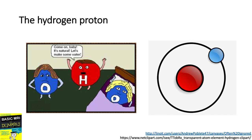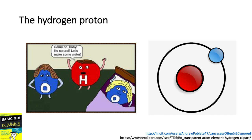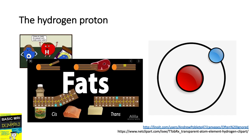In MRI, we use the term protons to represent the hydrogen nuclei. Hydrogen is used because it's abundant in the body. There is one hydrogen atom per molecule of water, and many hydrogen atoms per molecule of fat.